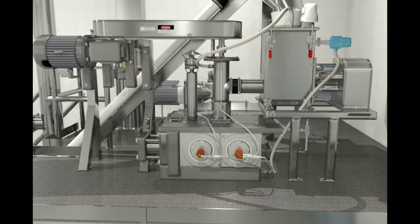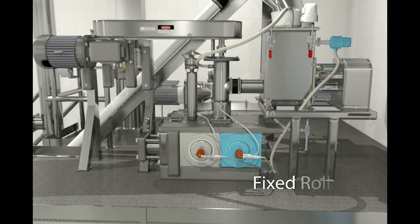Compaction is the consolidation of powder particles by exerting a mechanical pressure on two rolls, one fixed and one floating, to produce a densified sheet of material.